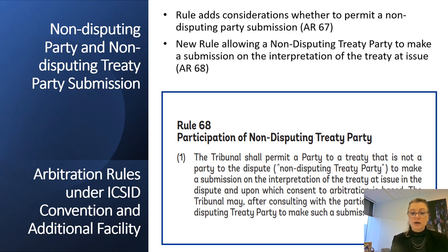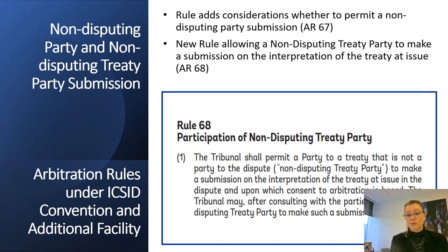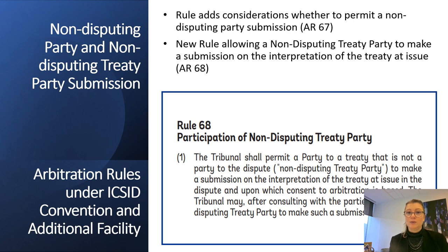The rule on non-disputing party participation is similar to what was before, but there is now also a new rule on non-disputing treaty party participation. That rule allows a state to make a submission on the interpretation of the treaty at issue to which that state is a party. So if there is a bilateral investment treaty involved in a case against a host state, the other state will have an as-of-right to file a submission about the interpretation of that treaty. If that state wants to file a non-disputing party submission more broadly, that is different and not as-of-right — it would need to do so under Rule 67, which sets certain conditions for how to become a non-disputing party participant.